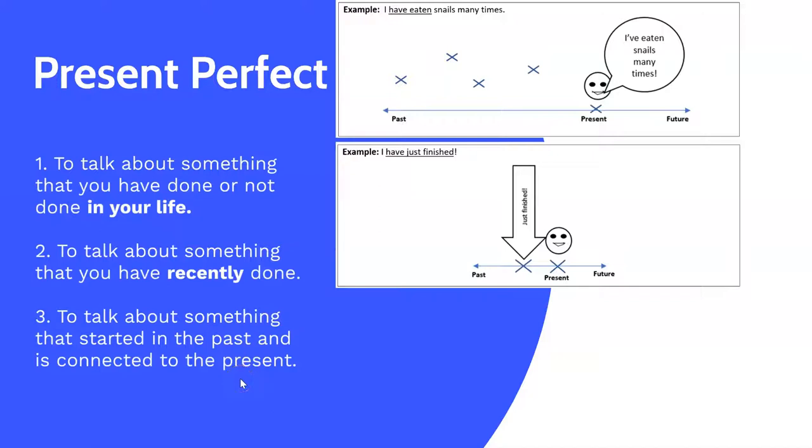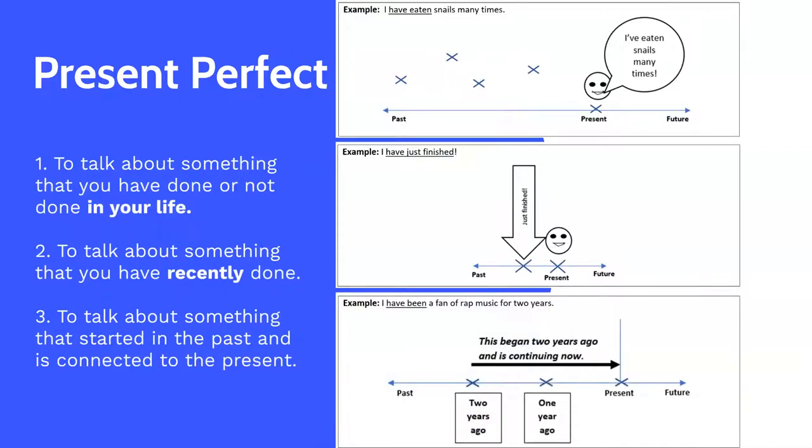Finally, we use the present perfect tense to talk about something that started in the past and is connected to the present. For example, I've been a fan of rap music for two years. This began two years ago and is continuing now. The focus is on the finished result, the fact that the speaker is a fan of rap music.